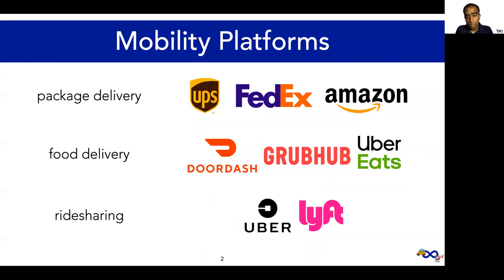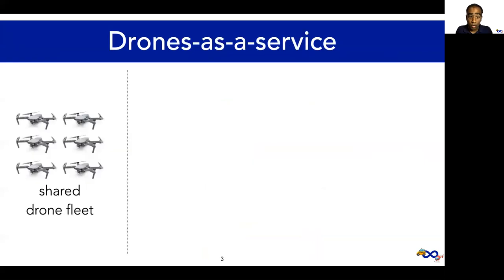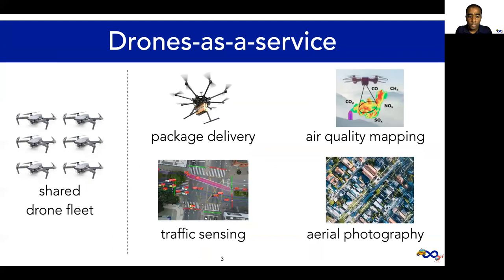Mobility platforms are the backbones for a number of vital services today, such as package delivery, food delivery, and ride sharing. Demand on many of these platforms has only exploded during the COVID-19 pandemic. Moreover, there are emerging mobility platforms, like drones-as-a-service systems, where a shared drone fleet can be used to simultaneously serve an array of urban sensing apps, from air quality mapping to traffic sensing.